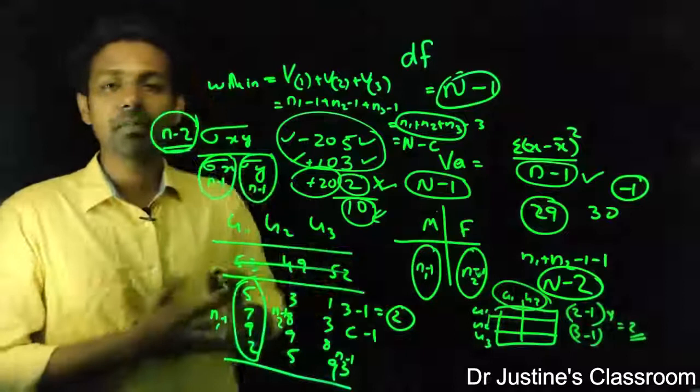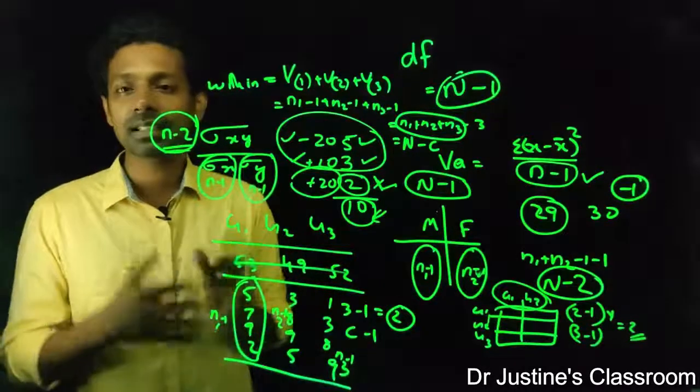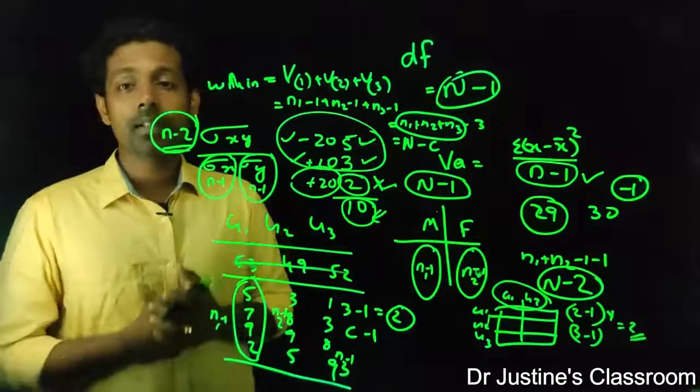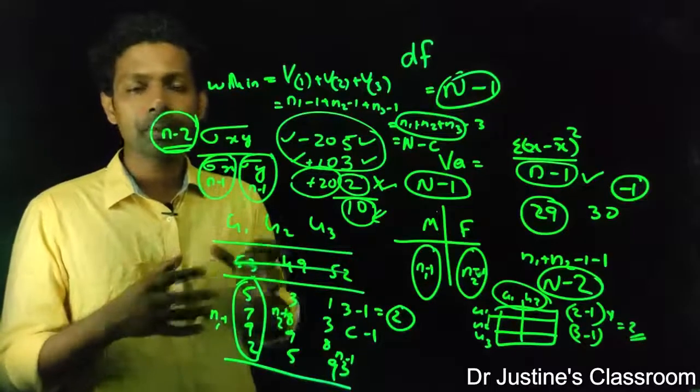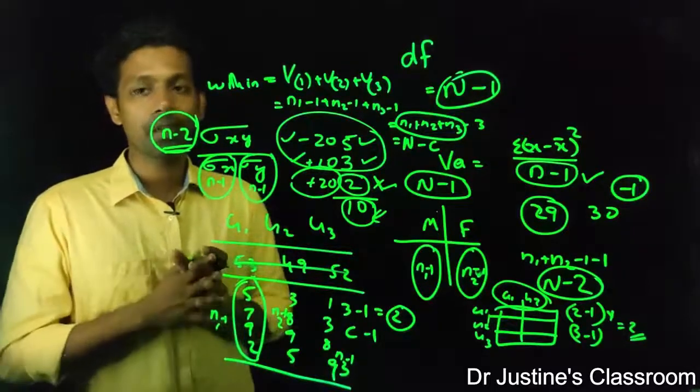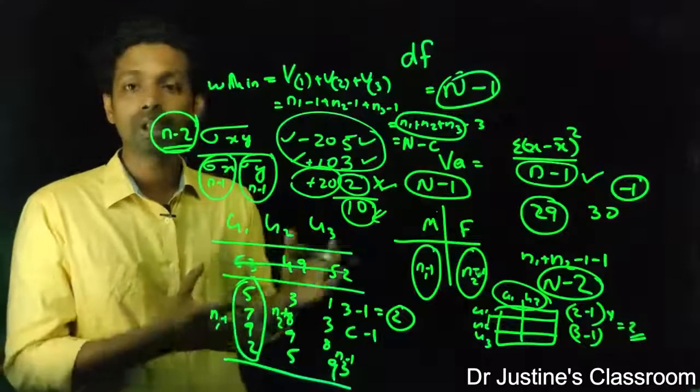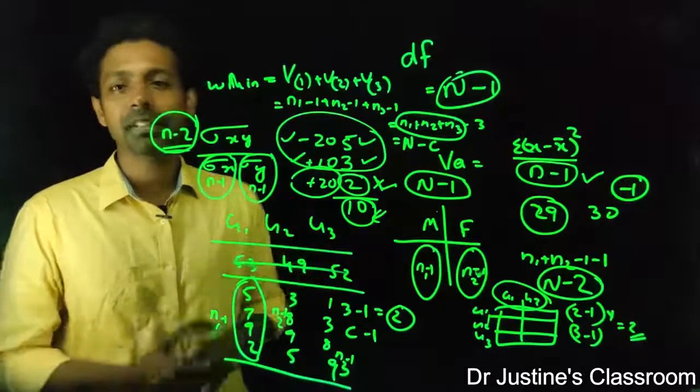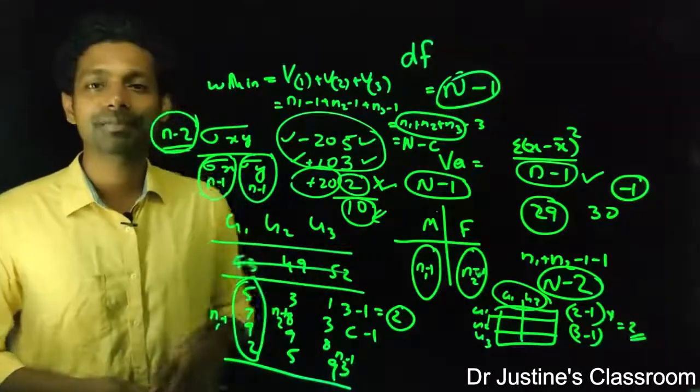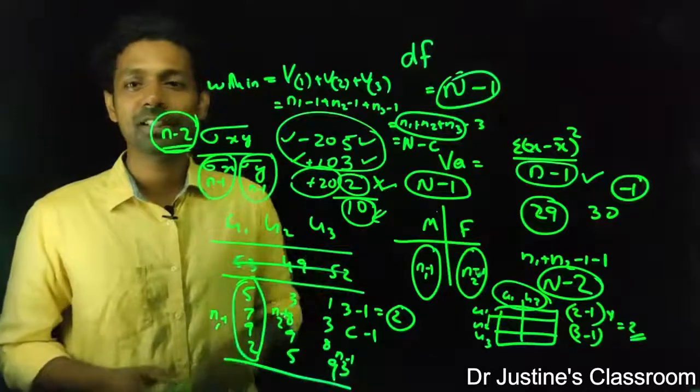So degree of freedom is a very interesting concept. It just tells me about the sample size, very specifically how many independent observations are there in our data based on which I am calculating my parameters. That's for today. Bye from my channel. See you in the next class.